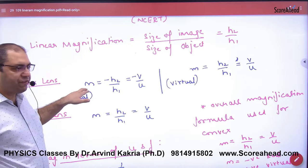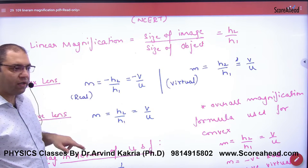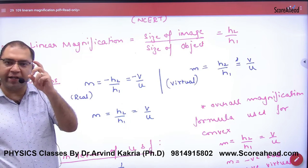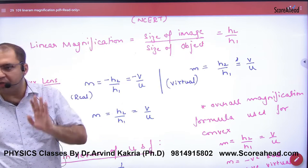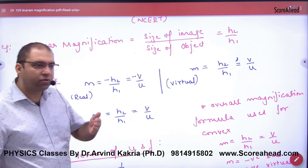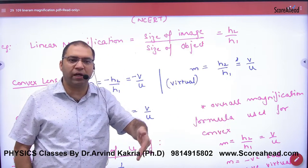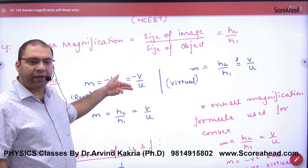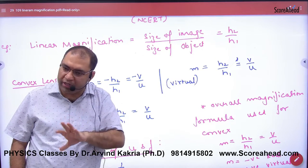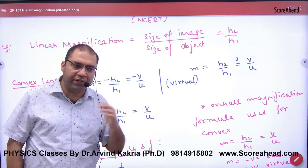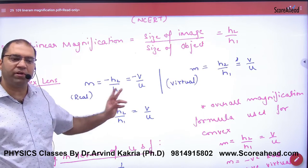So remember magnification: for a real image, the height of image is inverted, so the sign is minus h2. The object is always upright, so h1 is positive. That gives minus h2 by h1. The image is on the right side, so v is positive (+v), and the object is on the left, so u is negative (−u). Therefore magnification equals −v/u, which is negative. So overall magnification for a real image will always come out negative.